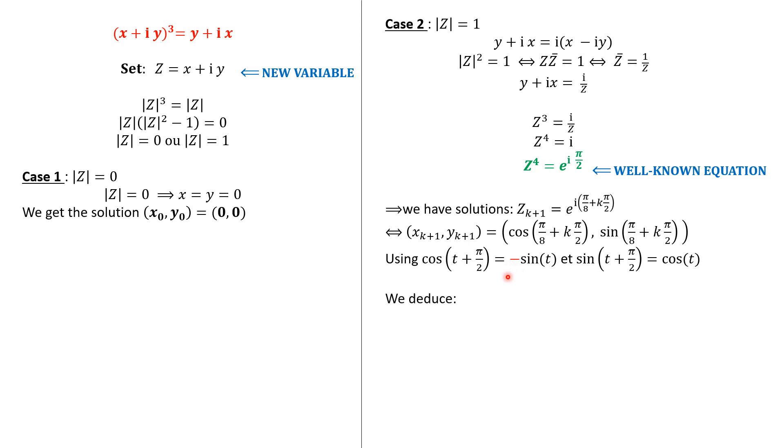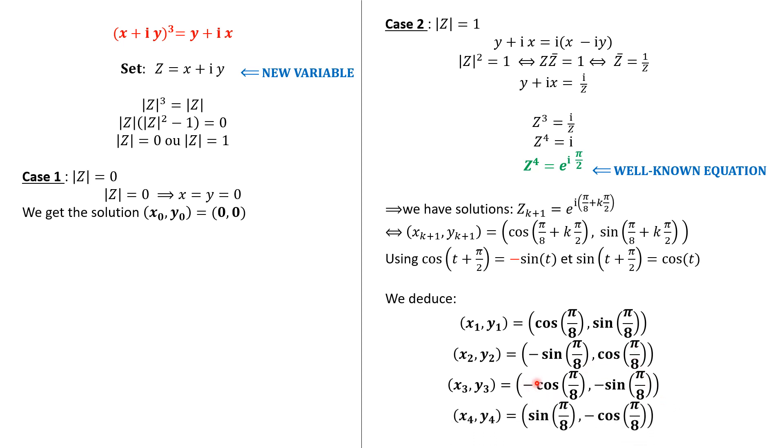So we're writing x₁ and y₁ as this. For x₂ and y₂, we just switch the position with the minus. We do the same, we switch position and the minus. Again, we switch the position and the minus. And we have four other solutions.